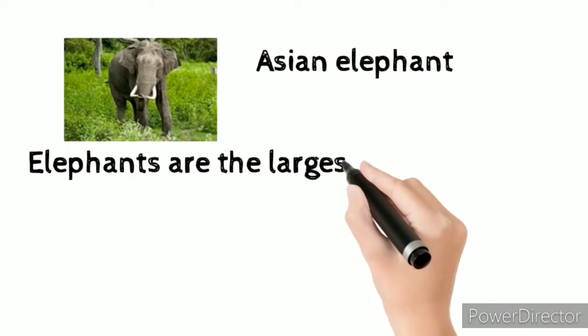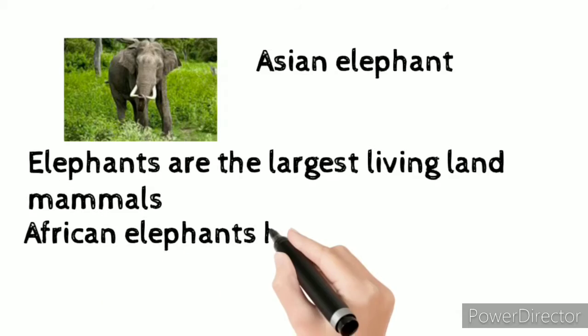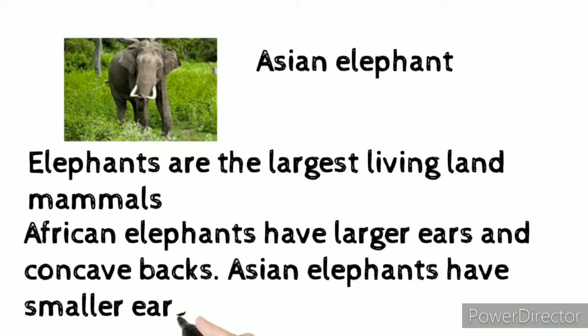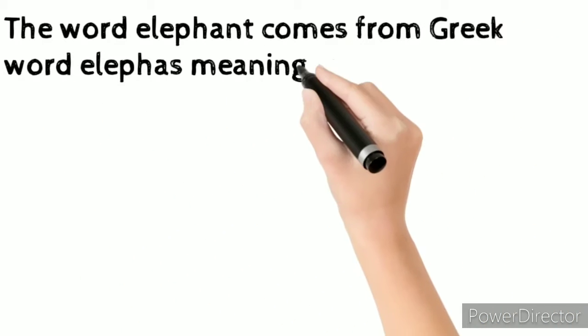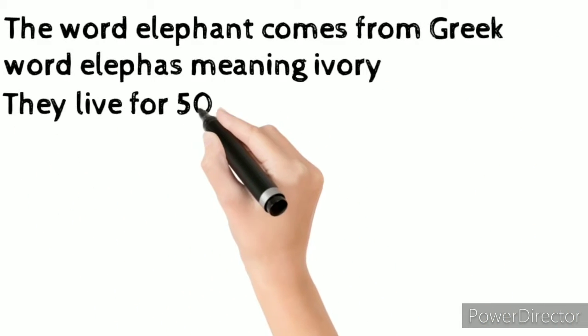Elephants are the largest living land mammals. African elephants have larger ears and concave backs. Asian elephants have smaller ears and level backs. The word elephant comes from the Greek word elephas meaning ivory.